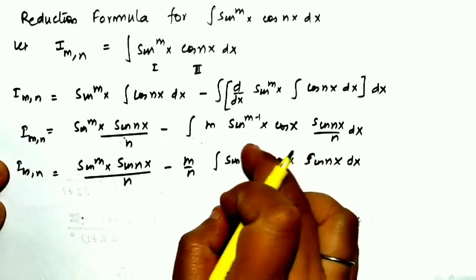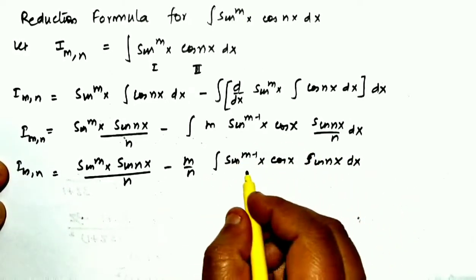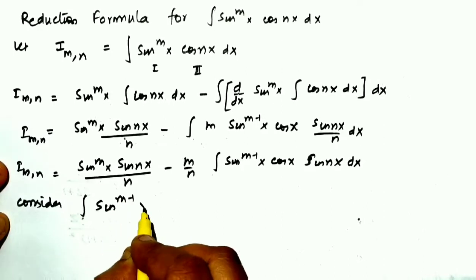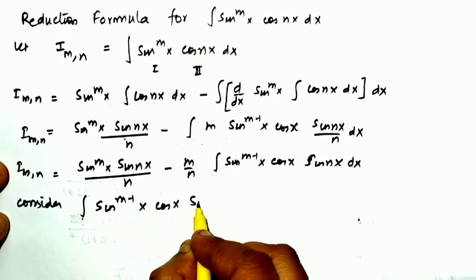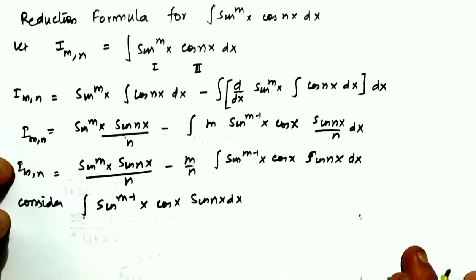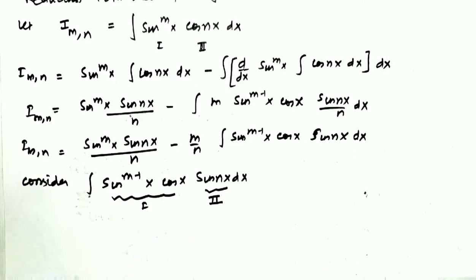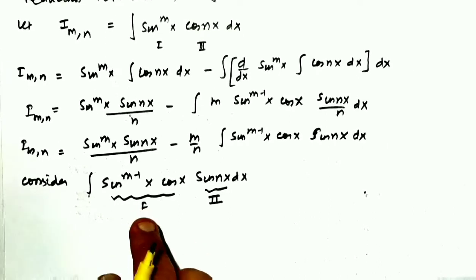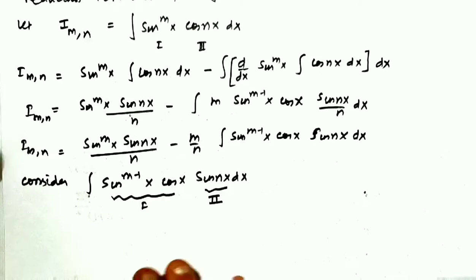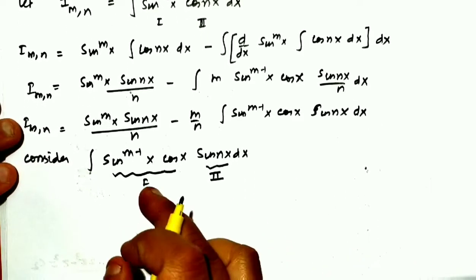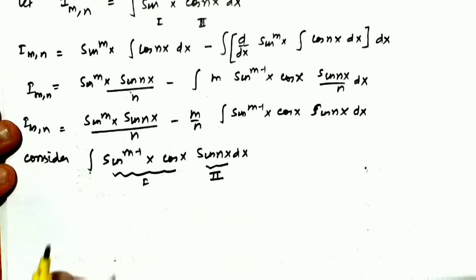Now we target this sub-integral. We will again apply integration by parts to evaluate only this integral. Consider the integral of sin^(m-1)(x)·cos(x)·sin(nx) dx. We take sin^(m-1)(x)·cos(x) as the first function and sin(nx) as the second function. The idea of the reduction formula is to connect two integrals — to find a relation between them. That is the only reason for choosing functions this way.